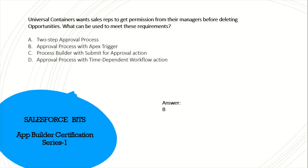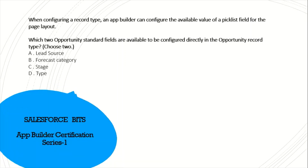When configuring a record app, an app builder can configure the available values of a picklist field for the page layout. Which two opportunity standard fields are available to be configured directly in the opportunity record? Having worked extensively with the opportunity object, the answer is A and D: lead source and type. Forecast category and stage are not available to be configured directly.